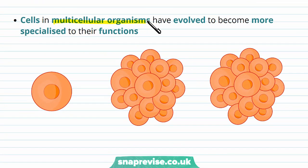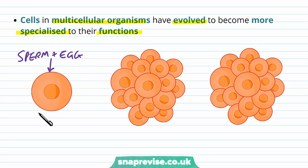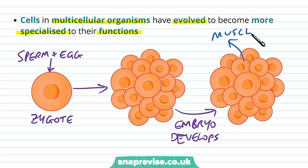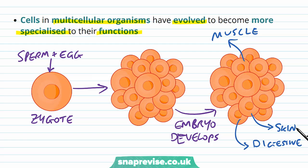Cells in multicellular organisms like ourselves have evolved to become more and more specialised to their functions. After a sperm and an egg have fused together, they form a zygote. Initially through division the cells stay quite basic, but as the embryo develops, some cells will start to become more specialised — some will become muscle, others will become skin, others will become part of the digestive tract, and so on. As it grows in size, more cells become more specialised.